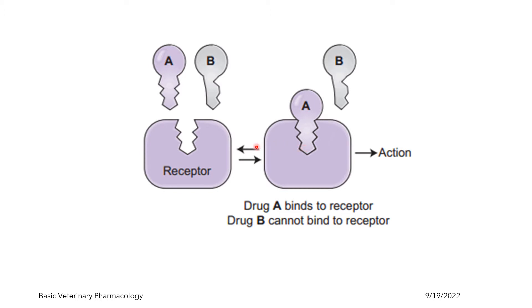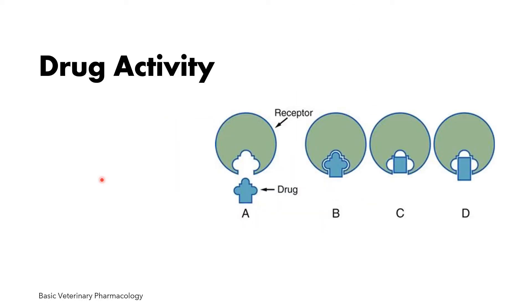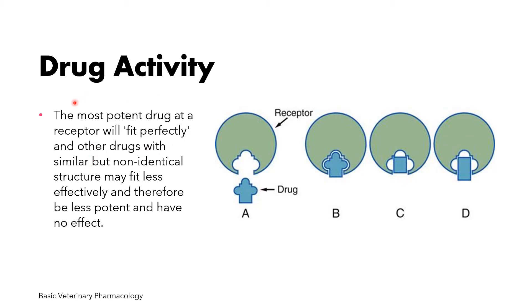This line indicates that the binding is reversible. When drug A has bound to its receptor, that means the drug has exhibited its action. Under drug activity, the most potent drug at a receptor will fit perfectly, while other drugs with similar but non-identical structures may fit less effectively and therefore be less potent or have no effect.